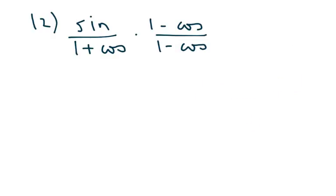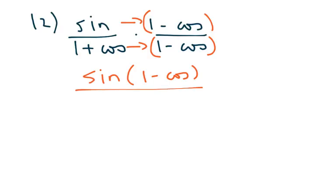The first one is they just want you to multiply, and what they're asking you to do is multiply by the conjugate. So we multiply, we're going to multiply across, and we get sin(1-cos) over (1+cos) times (1-cos).